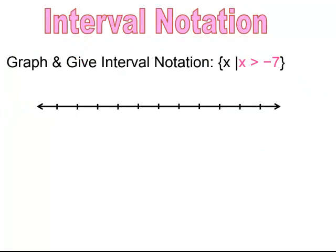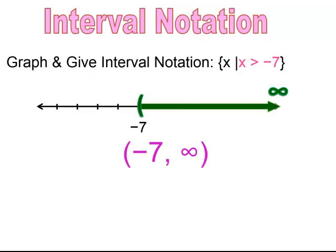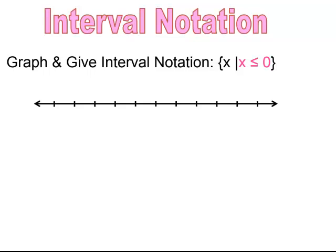Pause and try. If you graph this, you see that it's going to be an open parentheses going off in the positive direction, and my interval notation would be parentheses negative 7 comma infinity with a parentheses. Pause and try. We're going to be using a bracket.